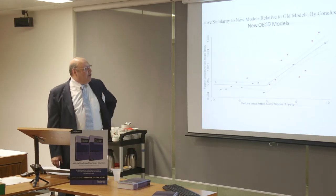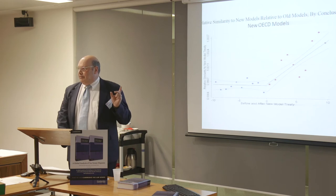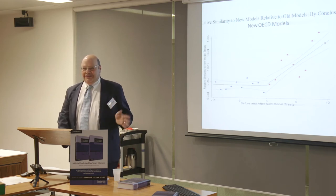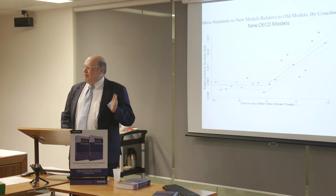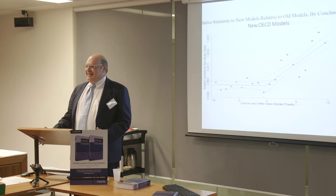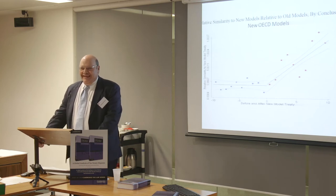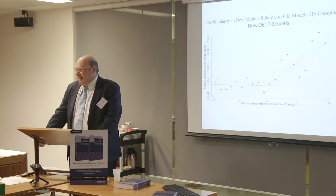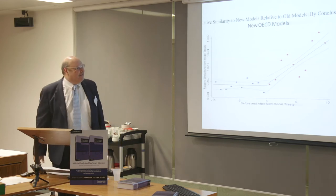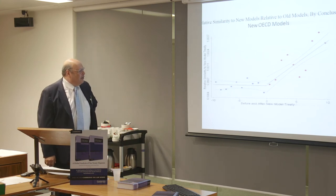There's also a chart — not reproduced here — showing similarities article by article, which is fascinating. By far the most similar article is Article 9 on associated enterprises. I've argued for a long time that the arm's length standard is part of customary international law and is binding, and this is proof — it's the one element present in every treaty with essentially identical wording. This shows dramatically how it is more binding than any other element in the treaties.